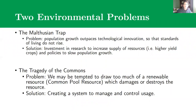Thomas Malthus looked at agricultural production over human history and noted a really disturbing and terrifying trend. Over human history there have been incredible successes in agricultural production — things like crop rotation, fertilizer, using animals to cultivate more land, heavier plows, and then mechanization — all of which allowed greater amounts of food to be produced on the same amount of land. You'd assume that would lead to increased human well-being, but as Malthus dug into the data, that wasn't the case.